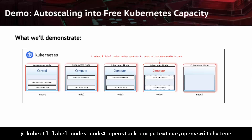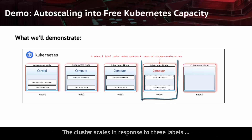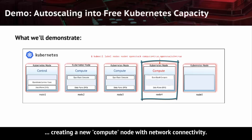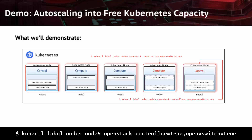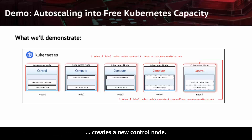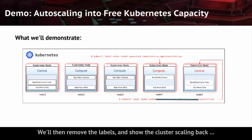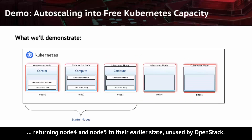We add the OpenStack compute equals true and OpenVSwitch equals true label to node 4. The cluster scales in response to these labels, creating a new compute node with network connectivity. Giving node 5 the OpenStack controller equals true and OpenVSwitch equals true labels creates a new control node. We'll then remove the labels and show the cluster scaling back, returning node 4 and node 5 to their earlier state, unused by OpenStack.